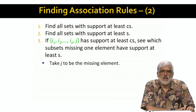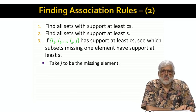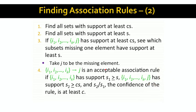Having removed J, look at the support of the remaining set I1 through IK. If it is at least S, we might have an association rule with that set on the left and the K plus first item J on the right. Suppose the set without J has support S1 and with J the support goes down to S2. Then the confidence of the rule is the ratio S2 over S1 because that is the fraction of the baskets with I1 through IK that also contain J. If that confidence is at least C, then we have an acceptable association rule.